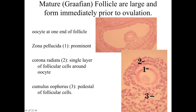The mature or Graafian follicle is going to become FSH independent. It's going to be very large, forming immediately prior to ovulation. At higher magnification, we can still see the oocyte with the very prominent zona pellucida surrounding it. A single layer of ovarian follicular cells form the corona radiata, which will be ovulated with the egg. The other follicular cells form a cluster called the cumulus oophorus — a pedestal that keeps the egg and corona radiata anchored so they're not floating free within the antrum.